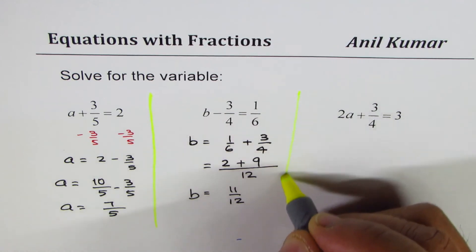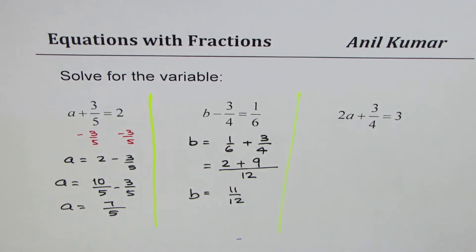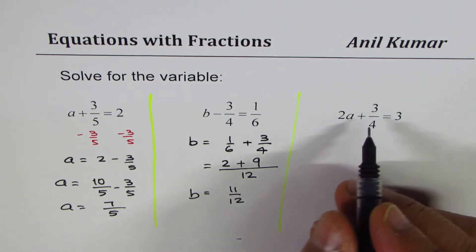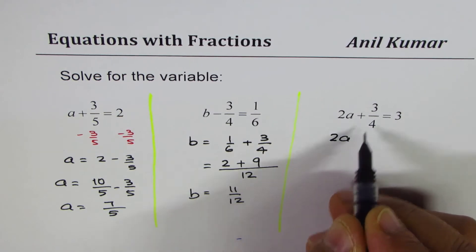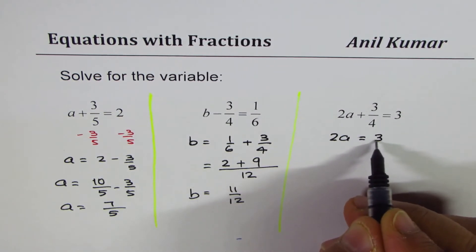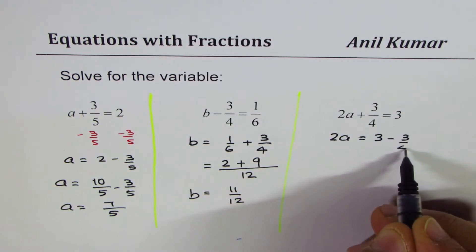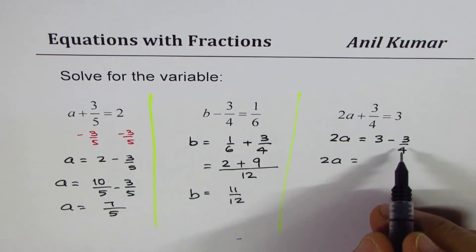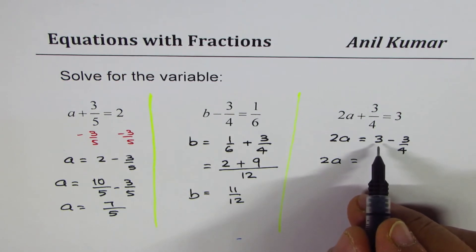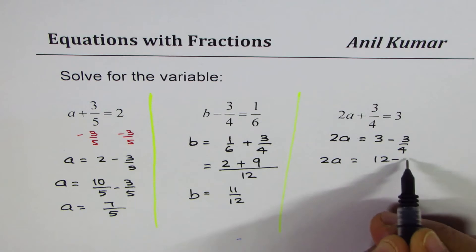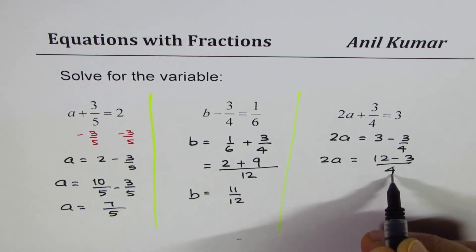Now, the last one. We have 2a plus 3 over 4 equals 3. First step will be take away 3 over 4. So we get 3 minus 3 over 4. So we have 2a equals to, we'll do the common denominator, which is 4. To get 4, 3 shall be multiplied by 4. So we get 12 minus 3 divided by 4.